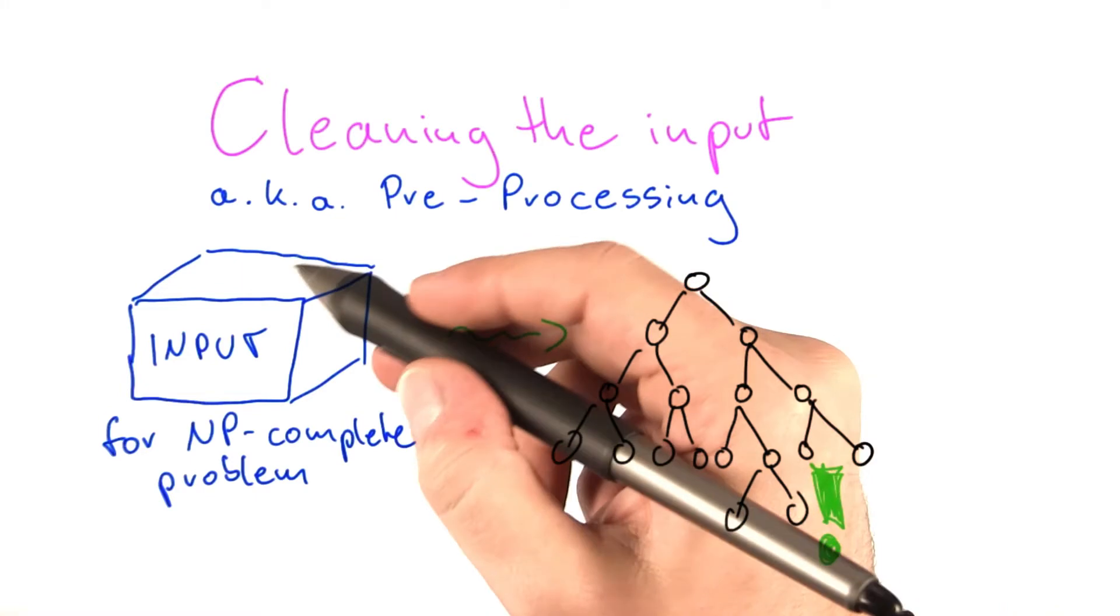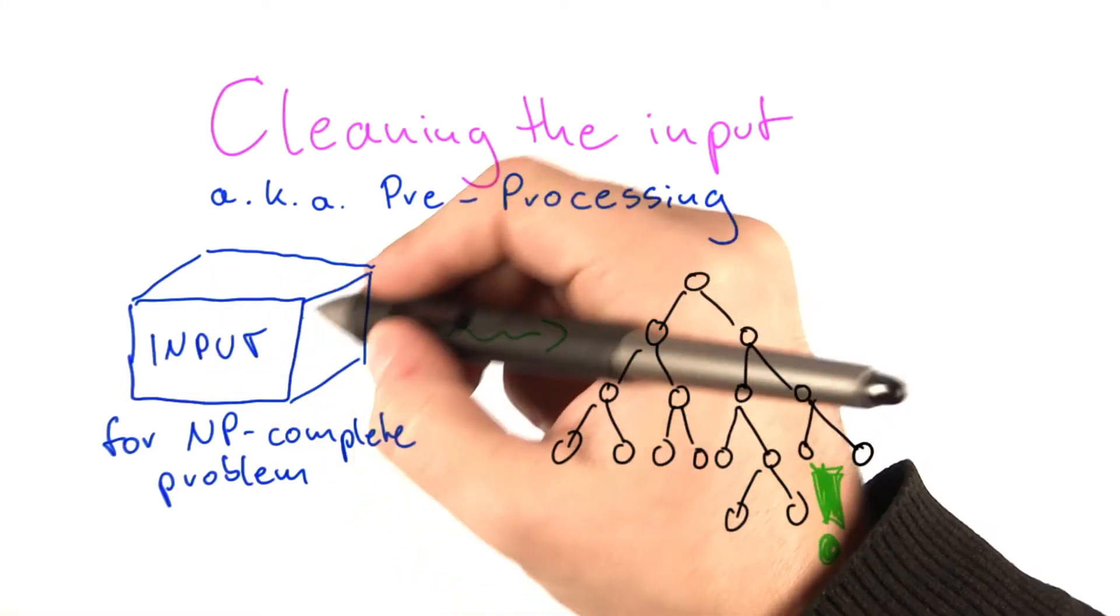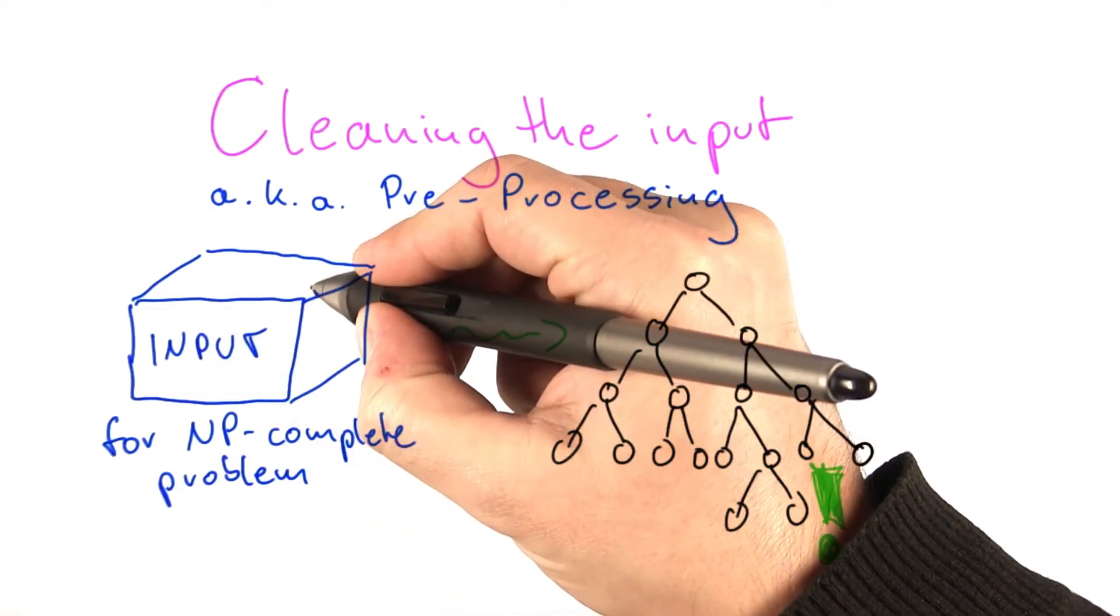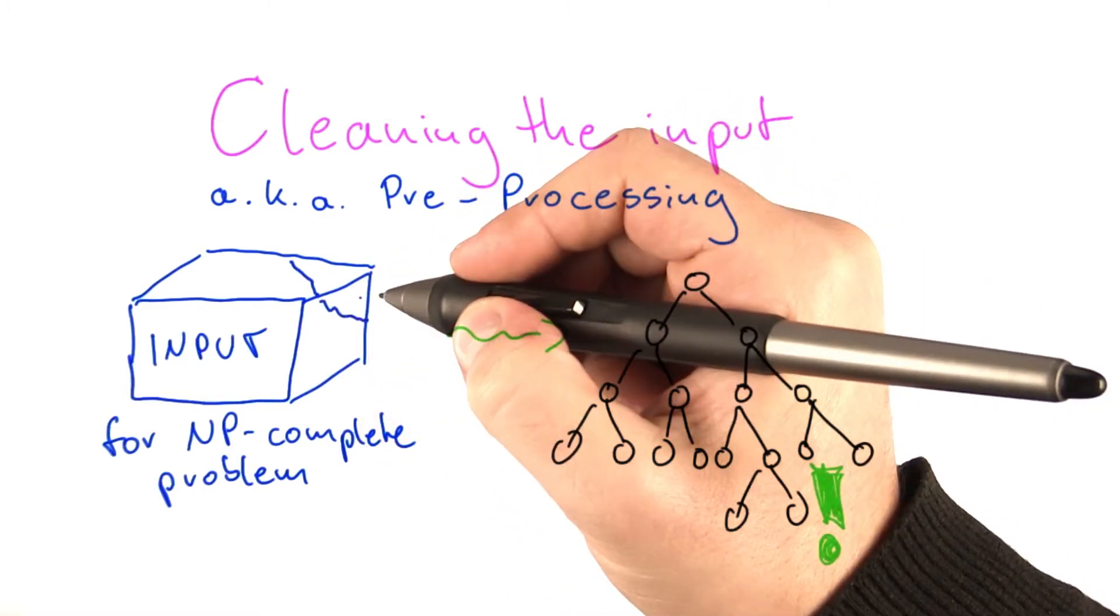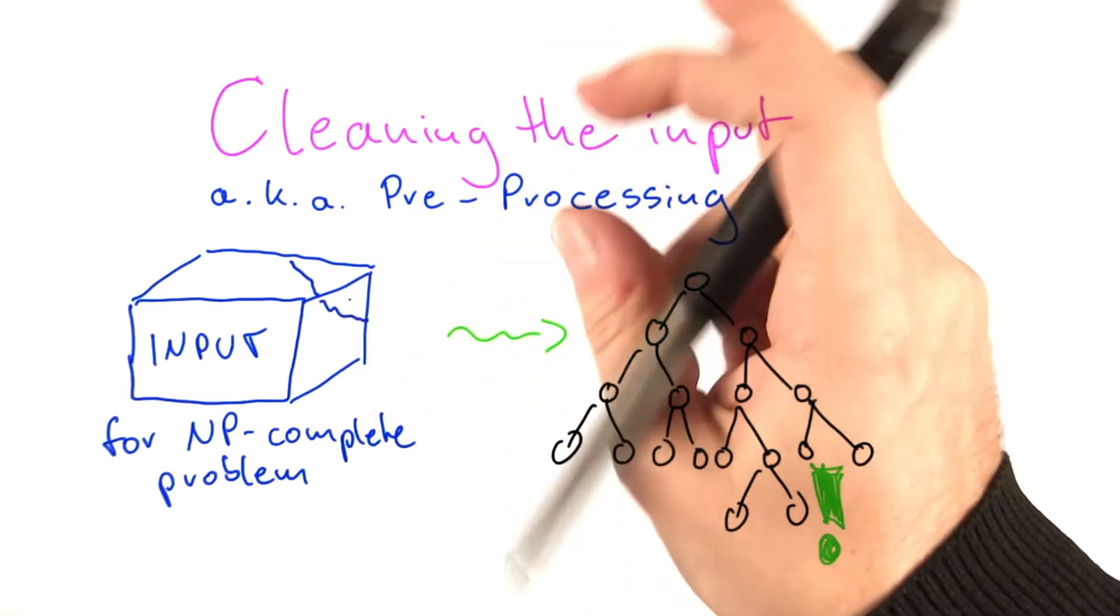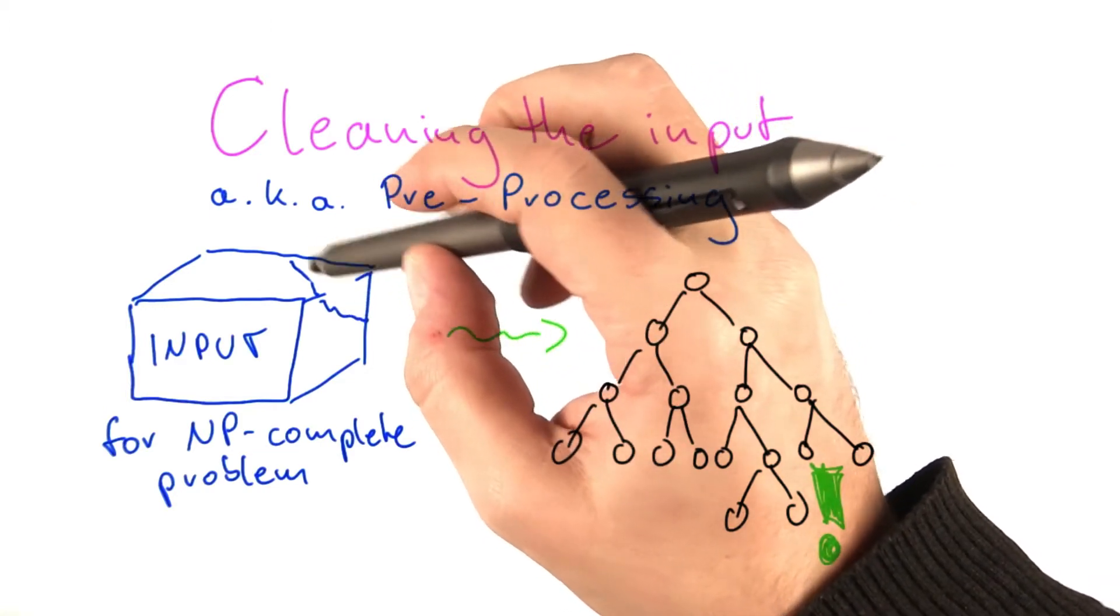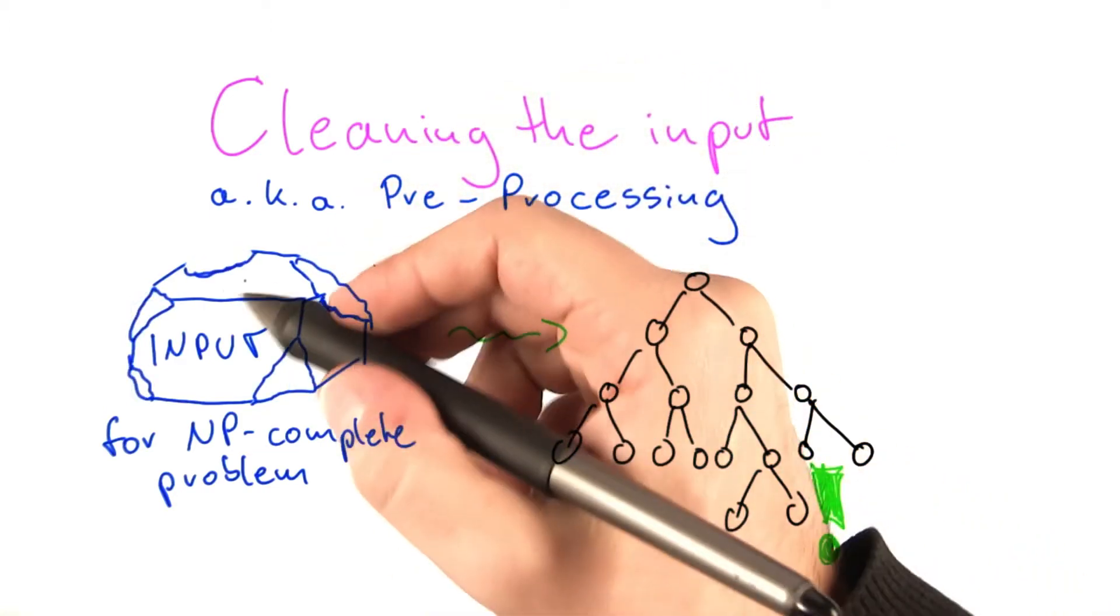The idea of preprocessing is if you can actually find certain parts of the input where in polynomial time, of course, you can already say how they would be handled in an optimum solution. So we're kind of nibbling away at the input here.